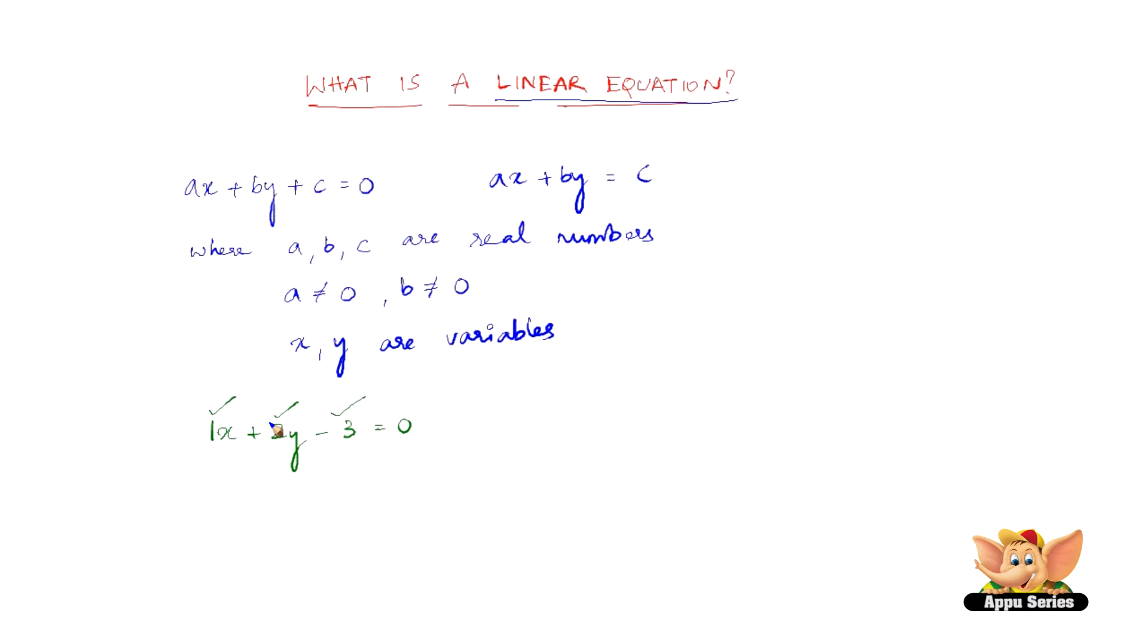So if we have to write this differently, we can write x plus 2y equals to 3 and this still is a linear equation.